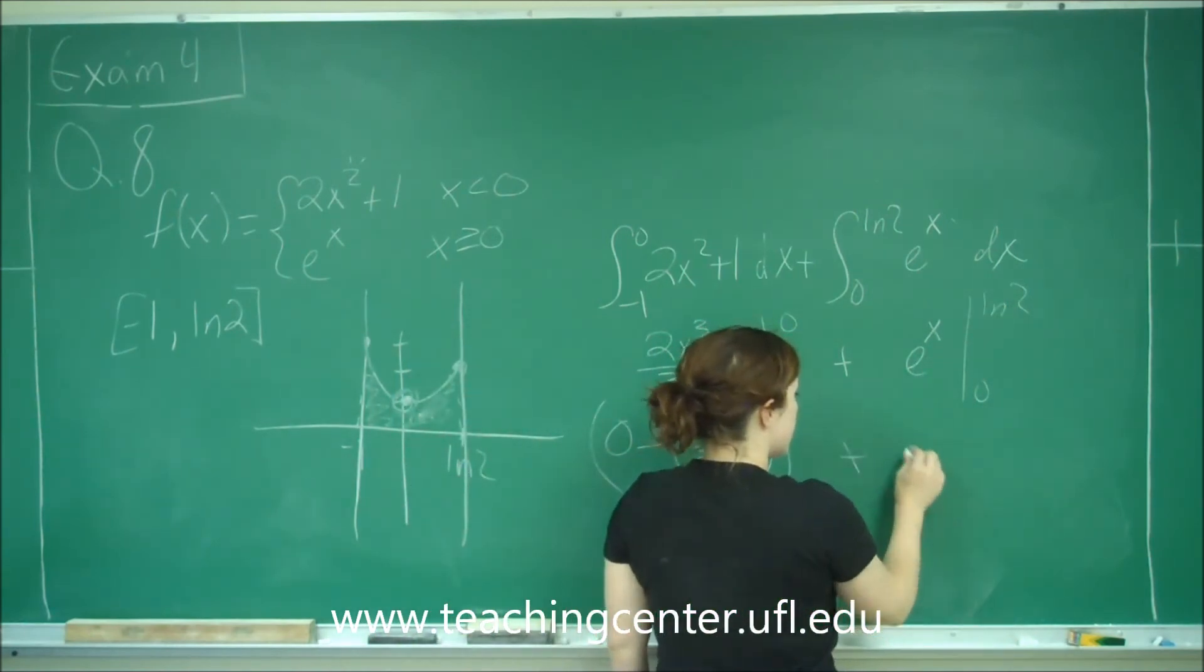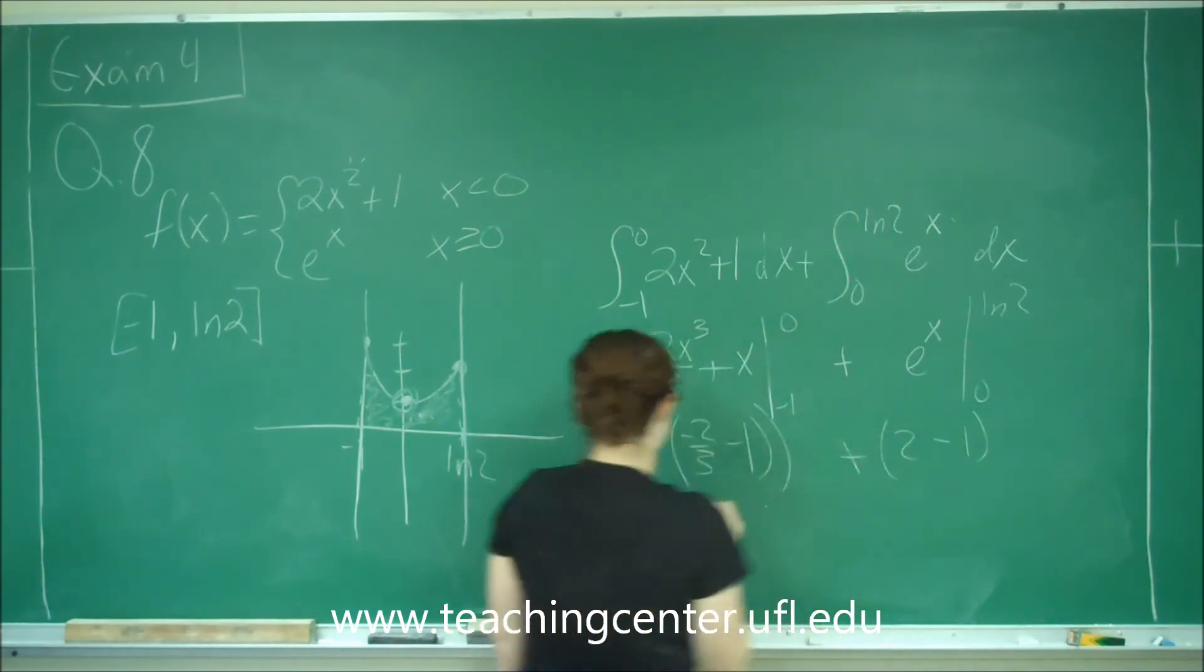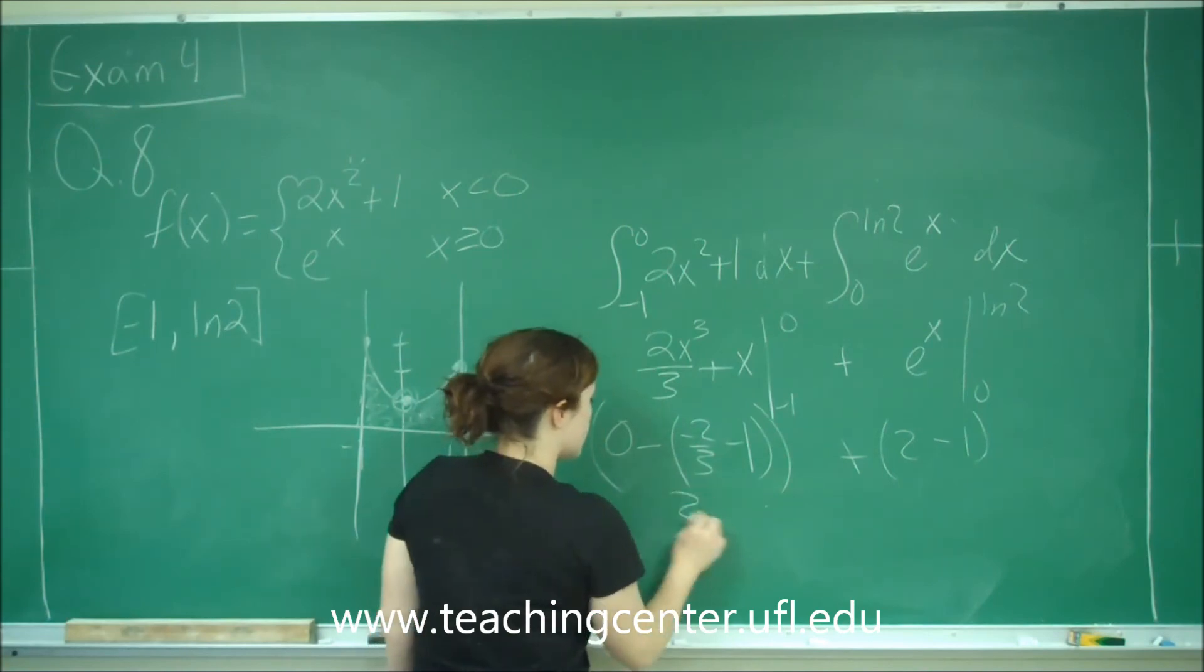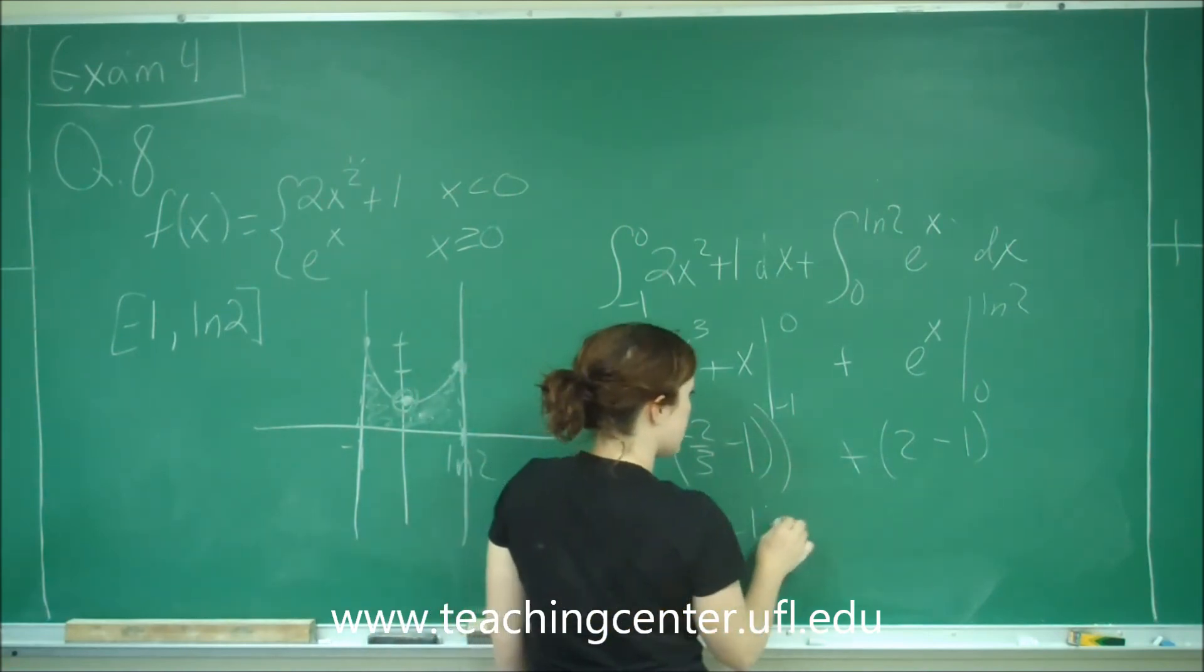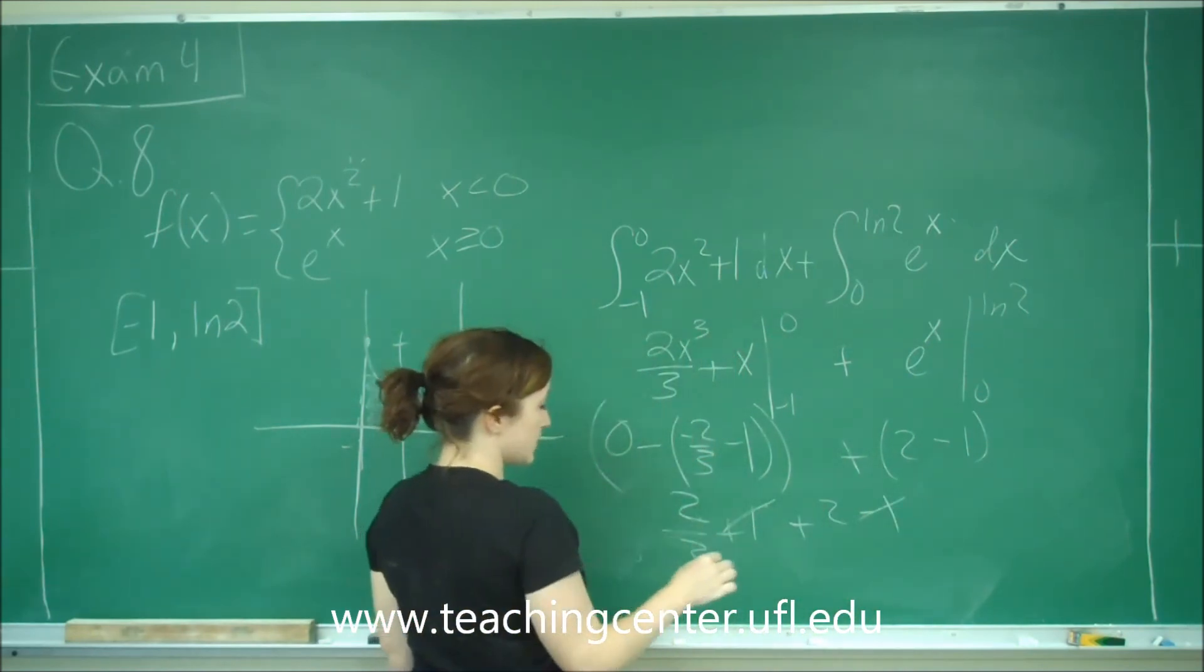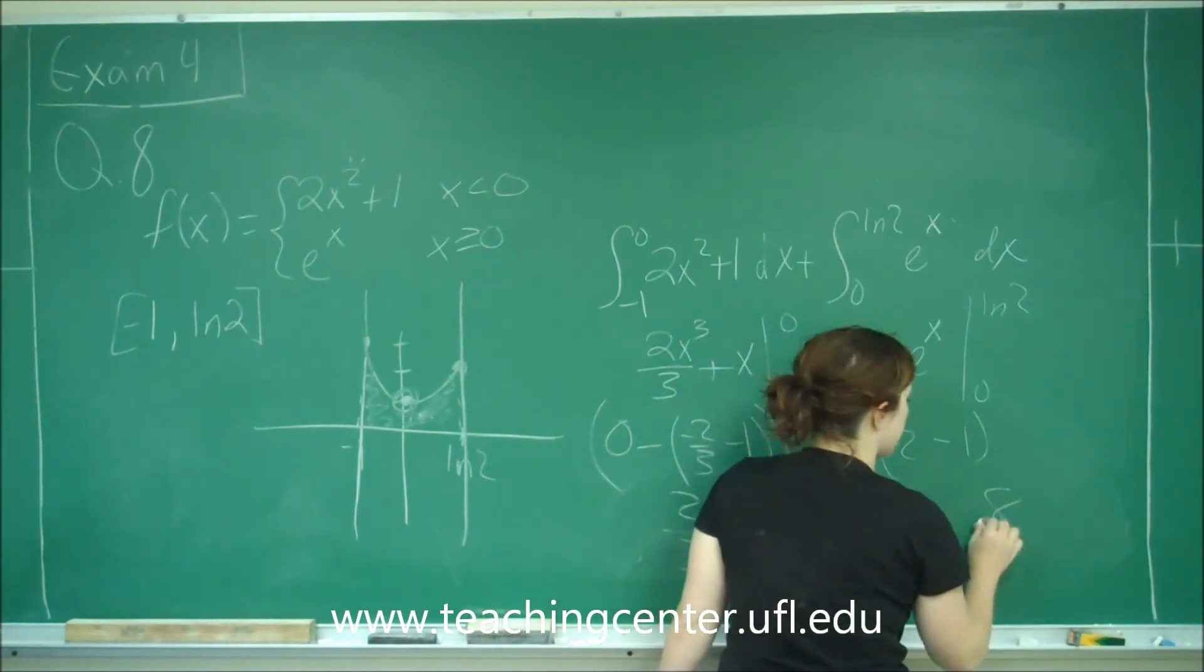Plus e to the ln of 2 is just 2, and e to the 0 is 1. So here I get 2 thirds plus 1 plus 2 minus 1. The ones cancel out, and I get 2 thirds plus 2. 2 equals 6 thirds, so 6 thirds plus 2 thirds is 8 thirds.